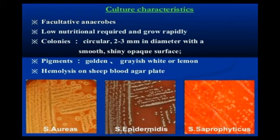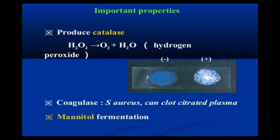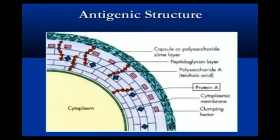The pigment color is golden, grayish, white, or lemon. Hemolysis occurs on sheep blood agar — hemolysis meaning the breakdown of red blood cells. Important properties include: it produces catalase and H₂O₂, which separates into oxygen and hydrogen. Coagulase in Staphylococcus aureus can clot plasma, and there is also mannitol fermentation.